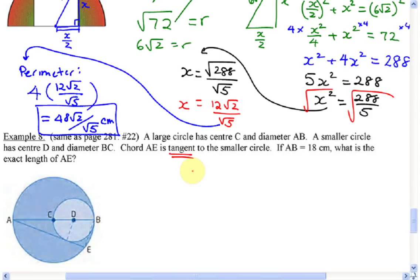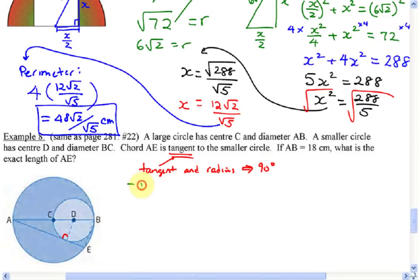What do we know about tangents and radii when they meet? They create a 90-degree angle. So tangent and radius always give a 90-degree angle at that point. The question: if AB is 18, what is the exact length of AE? As a hint, you're going to have to use similar triangles — not the special-angle triangles, but two similar triangles you can find within this picture.